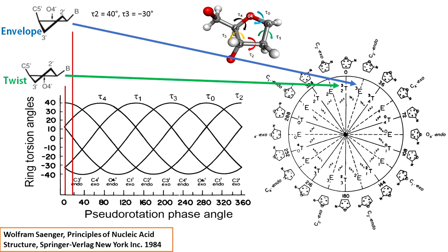Now, different pseudo rotation phase angles represent different puckering states. Let me take you directly to the pseudo rotation wheel for a full picture of the puckering states. This is called the pseudo rotation wheel or the pseudo rotation cycle. So you need to clearly understand this concept.